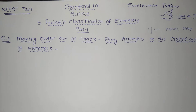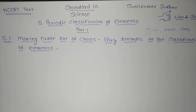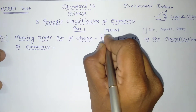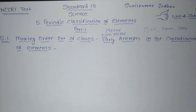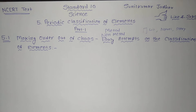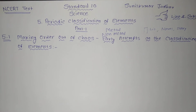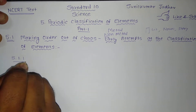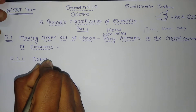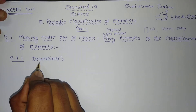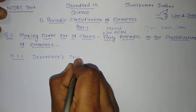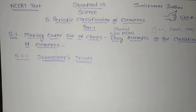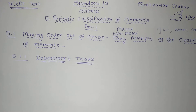The earliest attempt to classify elements resulted in grouping known elements as metals and non-metals. Elements were classified into these two main categories. Later, further classification was tried as knowledge of elements and their properties increased. The first scientist to attempt further classification is Dobereiner — section 5.1.1, Dobereiner's Triads. First we will learn who Dobereiner is and gather information regarding this scientist.